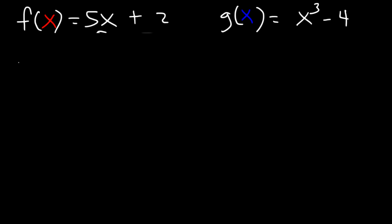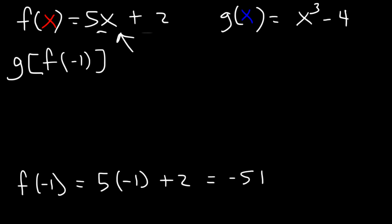So try this one. Evaluate g of f of negative 1. First, evaluate f of negative 1. That's 5 times negative 1 plus 2. Make sure you're using this equation. That's negative 5 plus 2, which is negative 3.